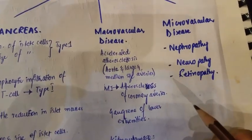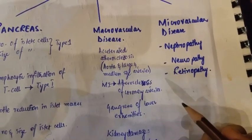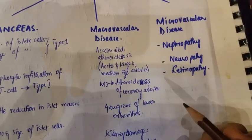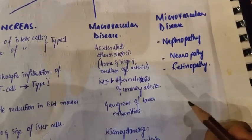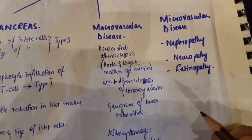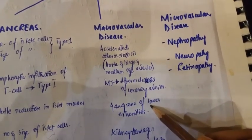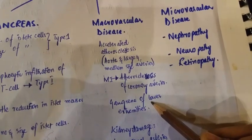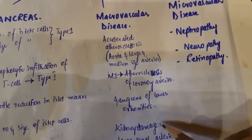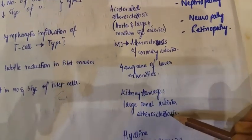What happens in macrovascular disease? Macrovascular disease is the disease of the aorta and the large and medium-sized arteries. It accelerates atherosclerosis, resulting in myocardial infarction due to atherosclerosis of the coronary arteries, gangrene of the lower extremities leading to amputation, and kidney damage because of renal artery atherosclerosis.